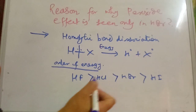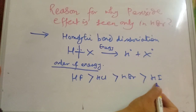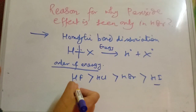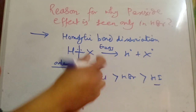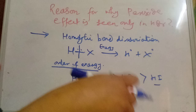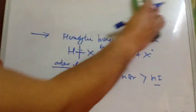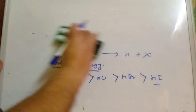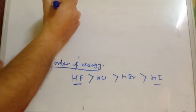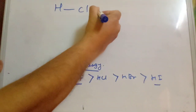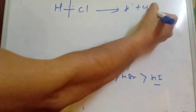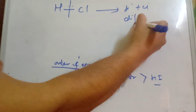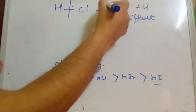In the case of HF and HCl, the homolytic bond dissociation energy is very high, which means homolysis is very difficult for HF and HCl. So the peroxide effect is not observed for HF and HCl — it is really difficult to achieve homolysis for these halides.